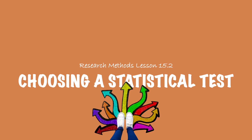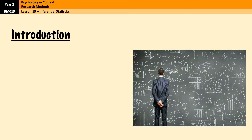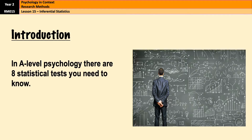If you haven't watched video one yet, I'm going to put the link up on the top of the screen. If you've already seen it and want to jump onto the sign test, which is video three, that will also be appearing at the top of your screen. So this is all about choosing an appropriate statistical test, and in A-level psychology there are eight statistical tests that you need to know.